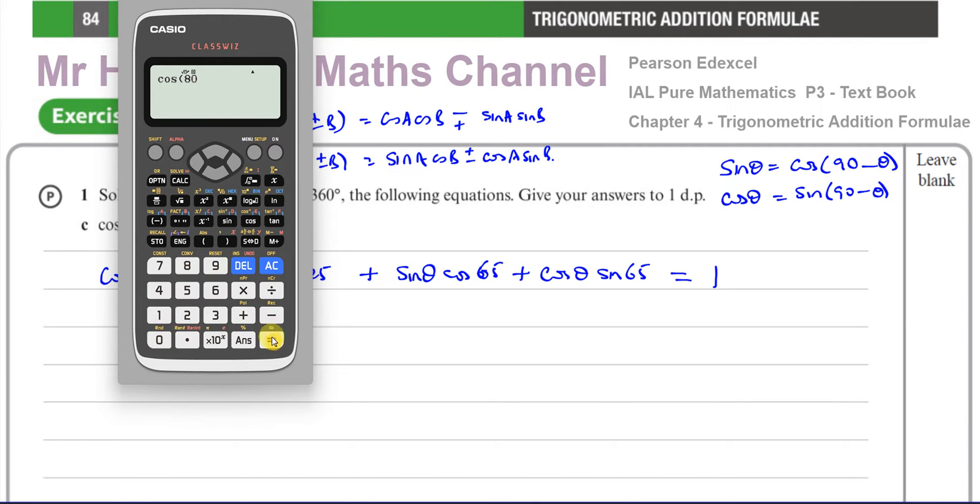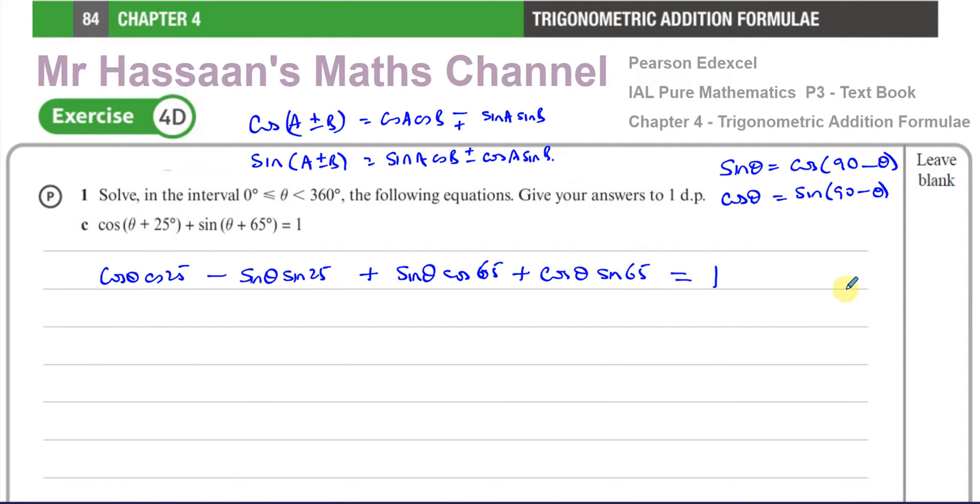Cos(80°) gives you exactly the same thing. For any two angles that add up to 90 degrees, the sine of one will be the same as the cosine of the other. So we can try to create some like terms and then be able to solve this.